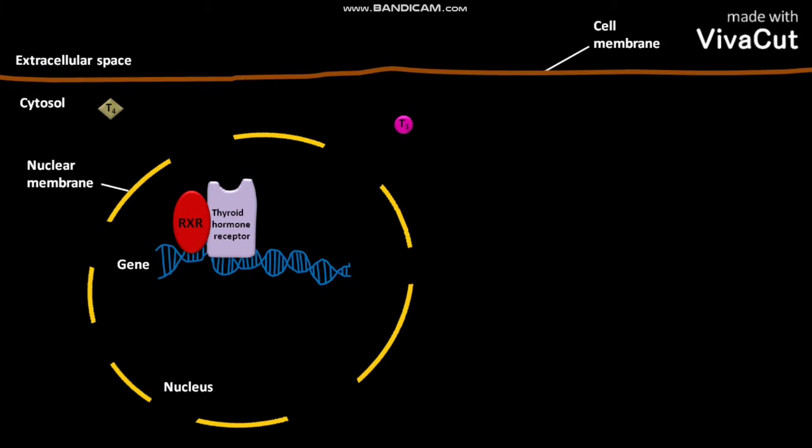In the cytosol of the cell, there are three types of iodinase enzymes. They are D1, D2, and D3.